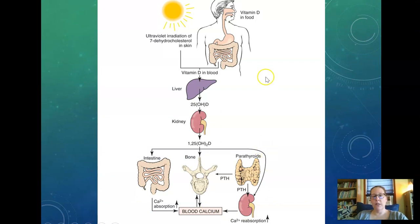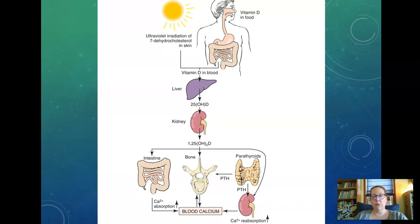Here's a diagram from your book showing this. You can get vitamin D from foods, supplements, or sunlight — sunlight modifies cholesterol in the skin to make the inactive form of vitamin D. It can be stored in the liver and sent to the kidneys, where inactive 25-hydroxyvitamin D is converted to the active 1,25-dihydroxyvitamin D. This then acts on bones to trigger resorption, on the intestines to increase calcium absorption, and with parathyroid hormone, on the kidneys to reabsorb calcium and increase blood calcium levels.